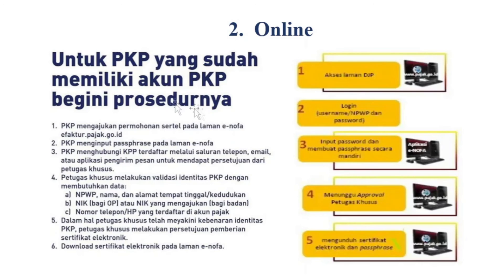Cara kedua adalah online. Di masa pandemi, lebih baik memanfaatkan fasilitas pengajuan secara online — ini tentunya untuk PKP yang sudah memiliki akun PKP dan bisa mengakses laman DJP Online. Langkah pertama, PKP mengajukan permohonan sertifikat elektronik pada laman Innova, yaitu ifaktur.pajak.go.id. Kemudian PKP meng-input passphrase-nya pada laman Innova secara mandiri, lalu PKP menghubungi KPP terdaftar untuk konfirmasi.